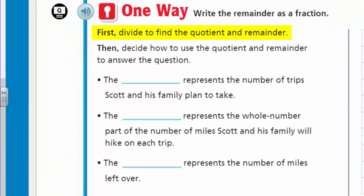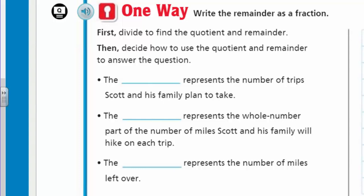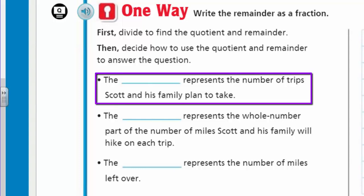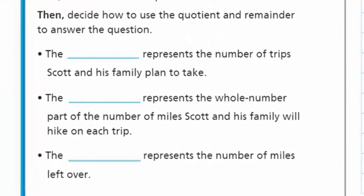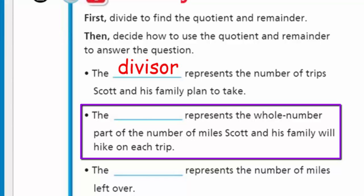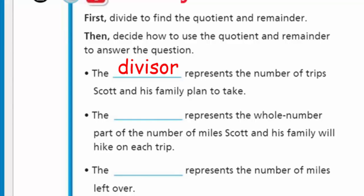First, divide to find the quotient and remainder. Then decide how to use the quotient and remainder to answer the question. The blank represents the number of trips Scott and his family plan to take — that is the divisor. The divisor represents the number of trips. The quotient represents the whole number part of the miles Scott's family will hike on each trip. And the remainder represents the number of miles left over.